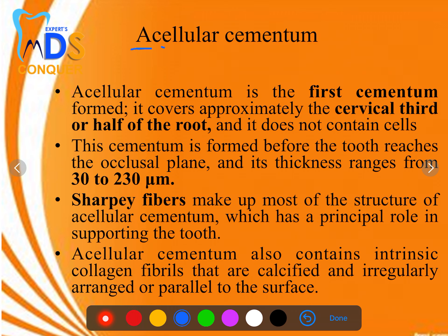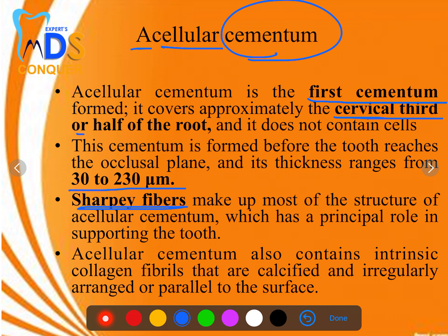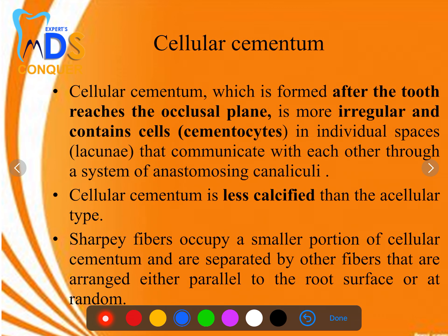Acellular cementum contains no cells; it is the first-formed cementum and is mainly seen in the cervical third of the root. Its thickness is around 30 to 230 micrometers. The Sharpey's fibers, which are the extrinsic fibers, make up most of the structure of acellular cementum, though it also has some irregularly arranged intrinsic fibers.